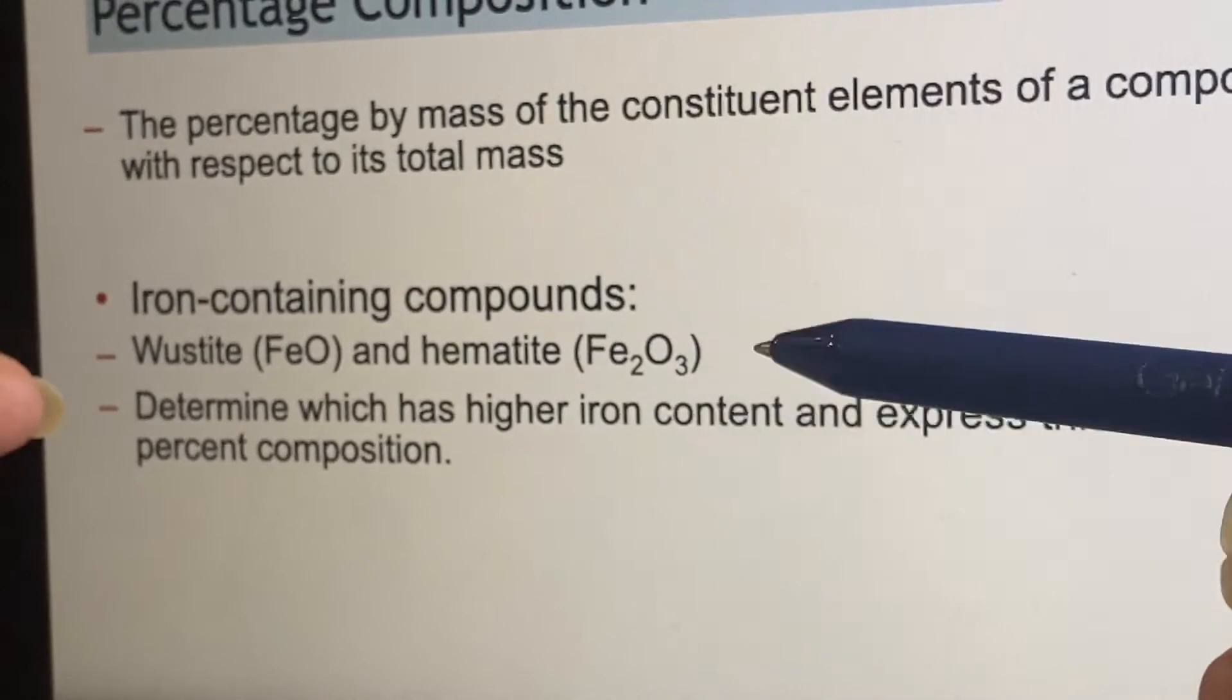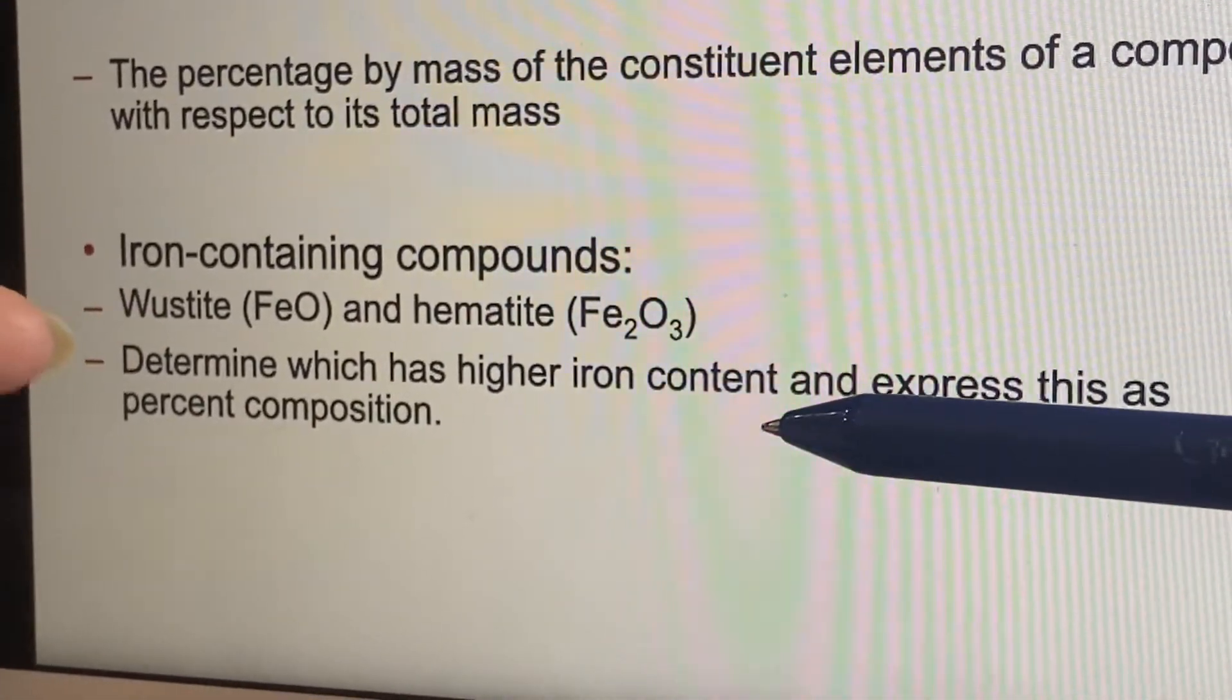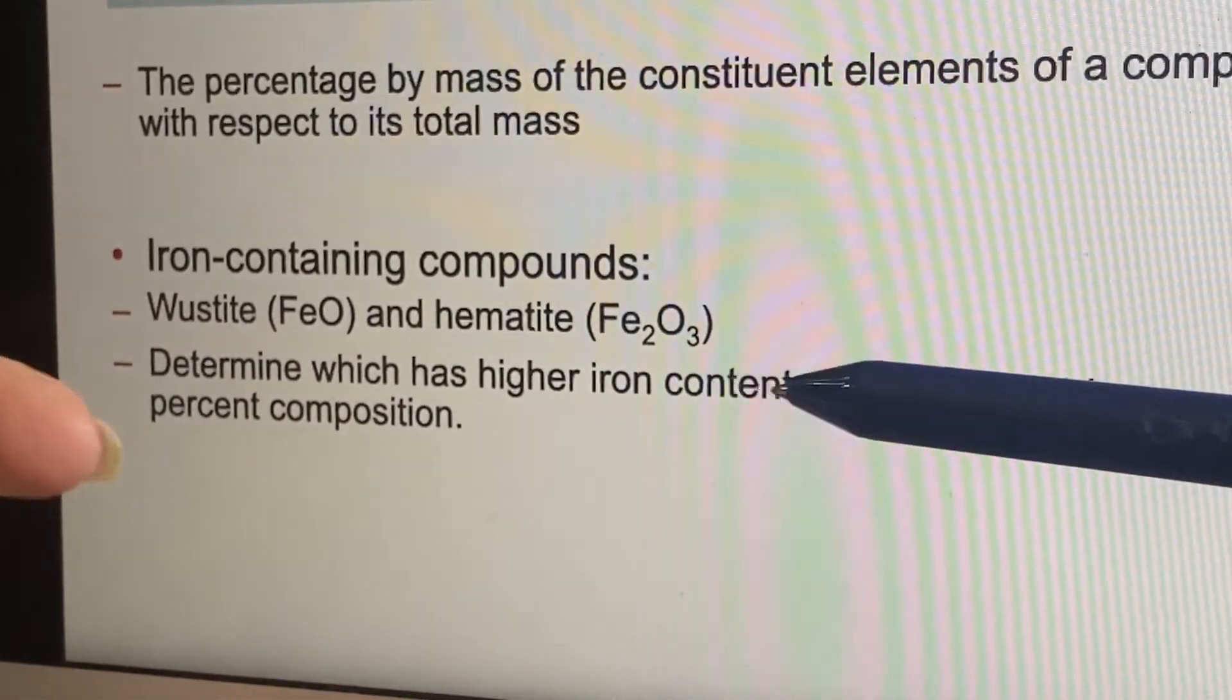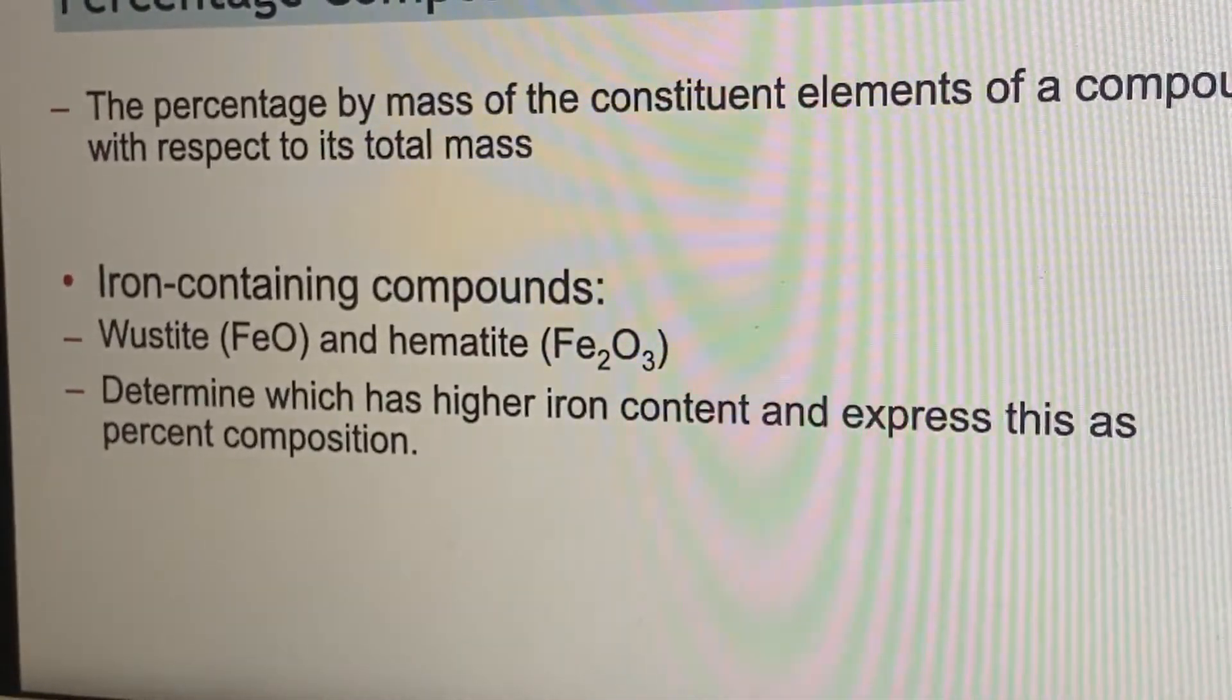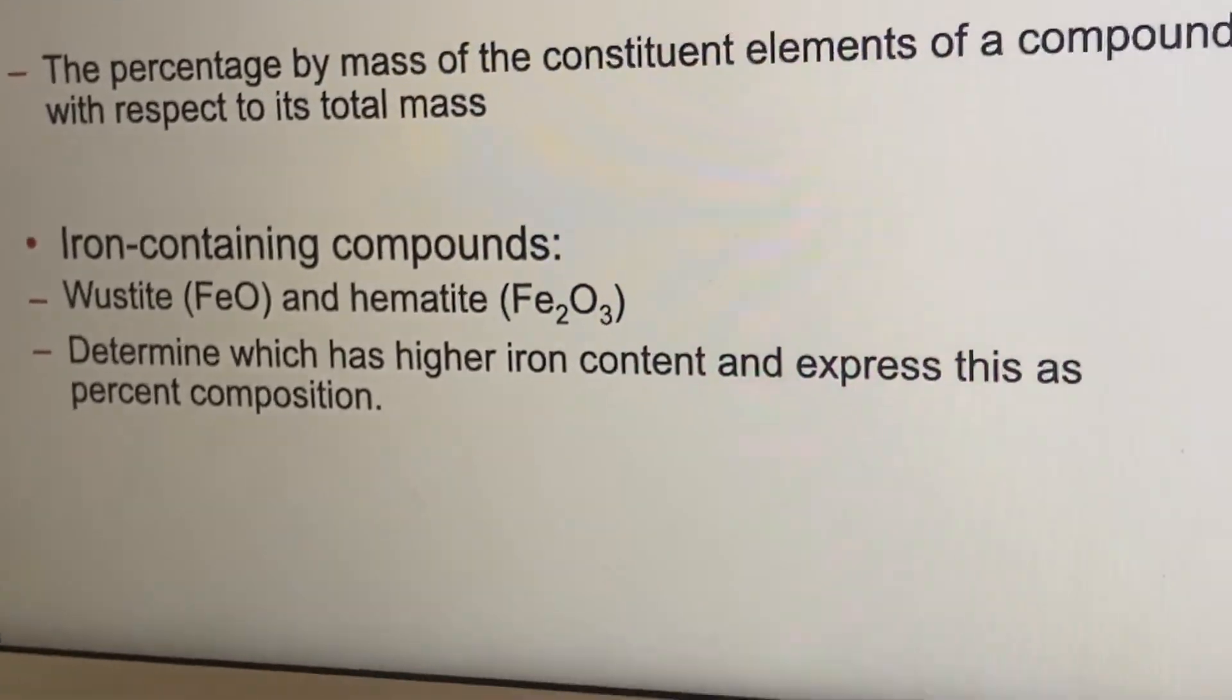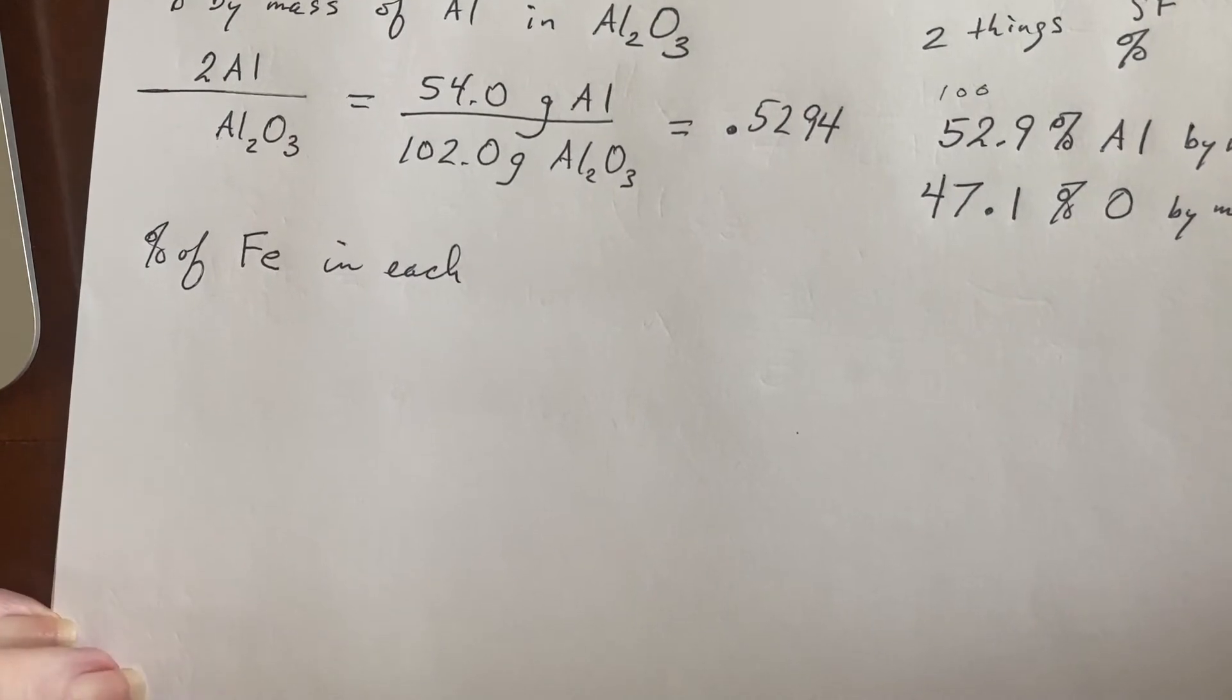Now let's do this thing with the iron because these two different types, you probably have never heard of wustite unless you have a rock hound somewhere in your family. Hematite is a little more well-known because they will actually polish that up and sell it as a semi-precious stone for beads and so on. But let us ask the question, what is the percent of iron in each of these compounds?